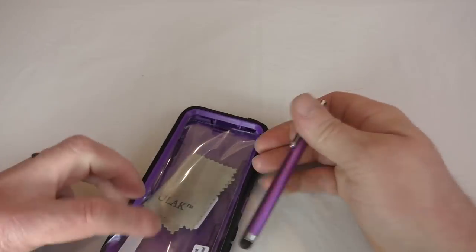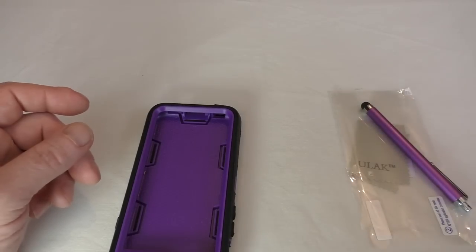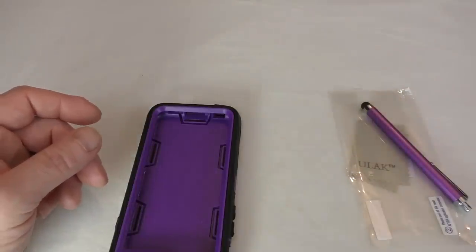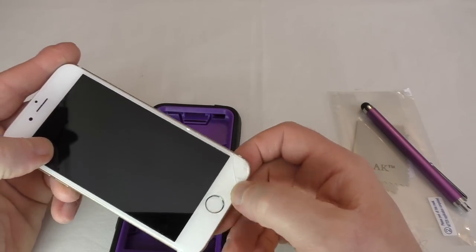As you can see you get a screen protector and a cloth and a squeegee. Now I won't actually be putting that on because I've already got one on my wife's iPhone 6 here. One you've seen in previous videos that already has a nice little crack in the screen there.